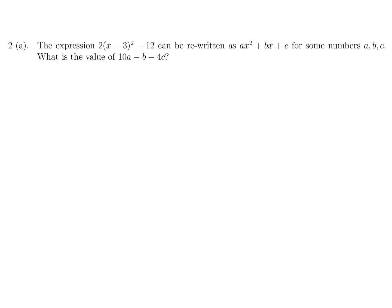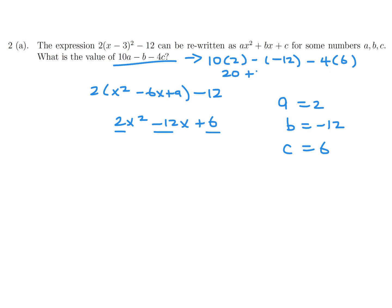The expression (2x minus 3) squared minus 12 can be written as ax squared plus bx plus c. What is the value of 10a minus b minus 4c? Let's expand this guy. So it's going to be x squared minus 6x plus 9 minus 12. And then expand once more. 2x squared minus 12x plus 18 minus 12. So that's plus 6. So this is the a, this is the b, this is the c. So a is 2, b is minus 12, and c is 6. So then we can calculate that guy, 10 times 2, minus minus 12, minus 4 times 6. So this is 20 plus 12 minus 24, and I believe that would be 32 minus 24, which is 8.